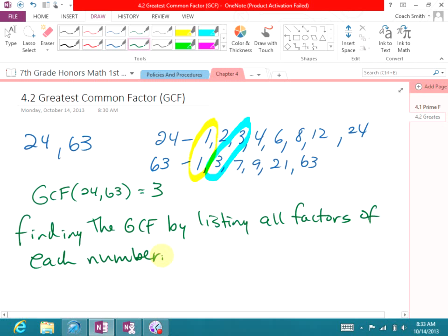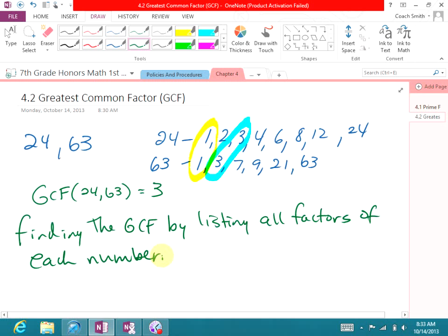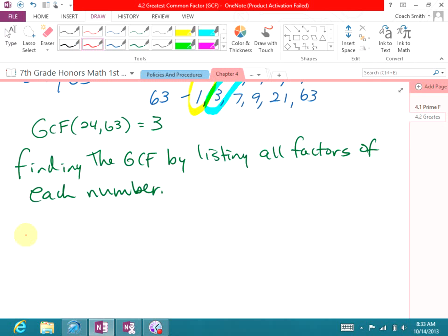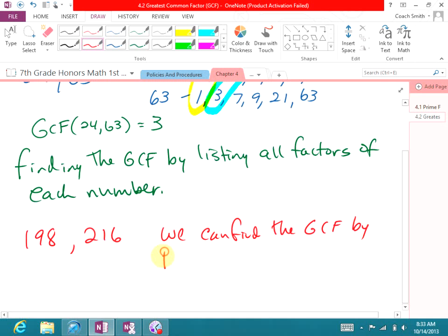Well, there's got to be another way to do it. For example, what if I gave you the numbers 198 and 216? Obviously, that might take you a while to list all the factors of both of those numbers. So, there is a way that you can do it. We can find the GCF by prime factoring each number.